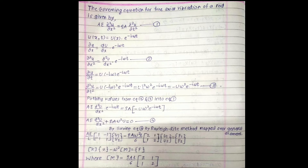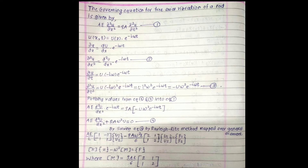Now I will calculate ∂²u/∂x² and ∂²u/∂t². For the time derivative, since U is a function of x it remains constant, so we get U · (−iω)² · e^(−iωt), which equals U · i²ω² · e^(−iωt), giving −Uω² · e^(−iωt).